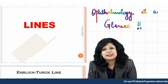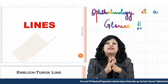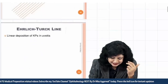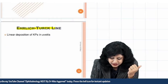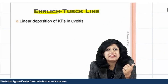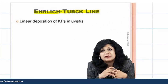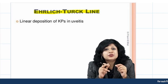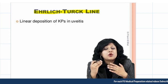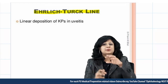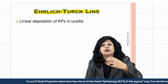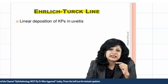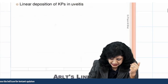Welcome to Ophthalmology at a Glance. Today we will be reading about the lines in ophthalmology. The very first line is the Iris Turk line — this is the linear deposition of keratic precipitates that you get in uveitis. This is not very common. More common is the Arlt's triangle, where you have deposition of keratic precipitates on the posterior surface of the cornea in a base-down triangular fashion. The Iris Turk line is the linear deposition instead.